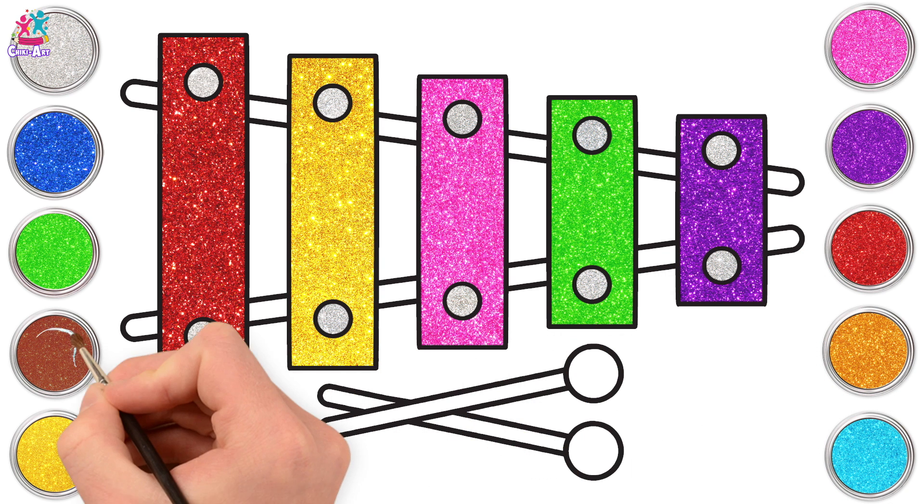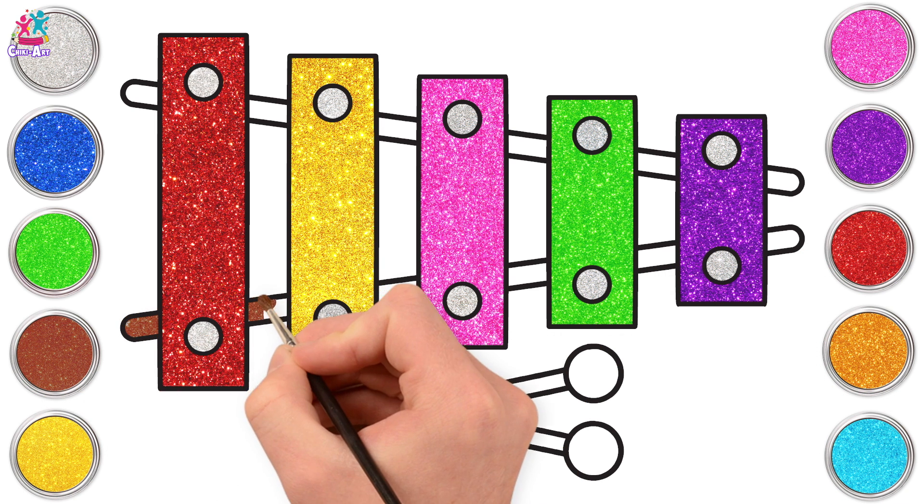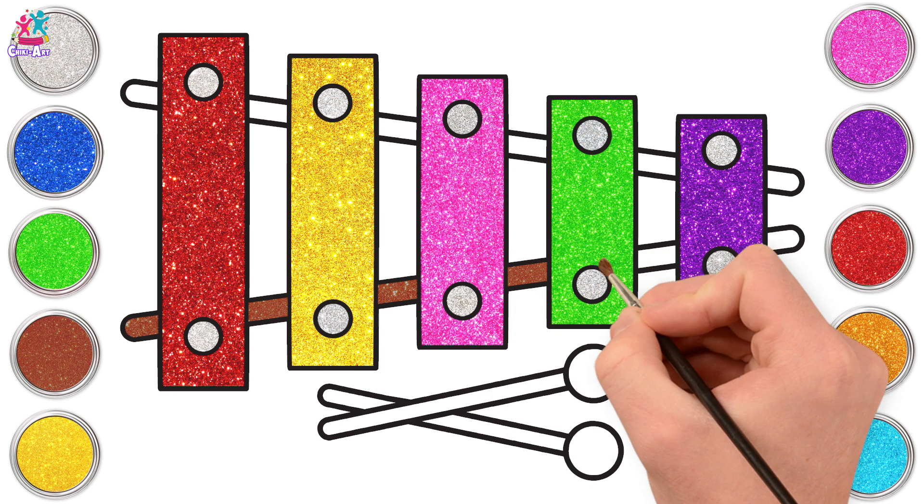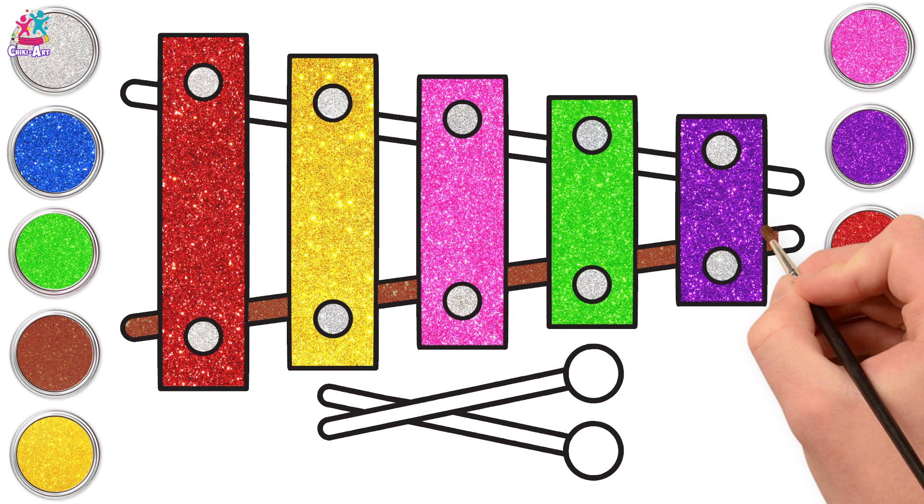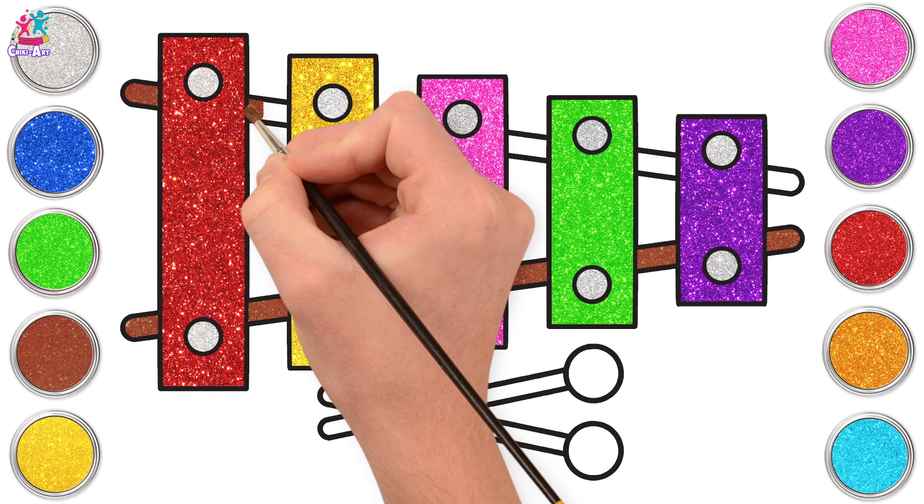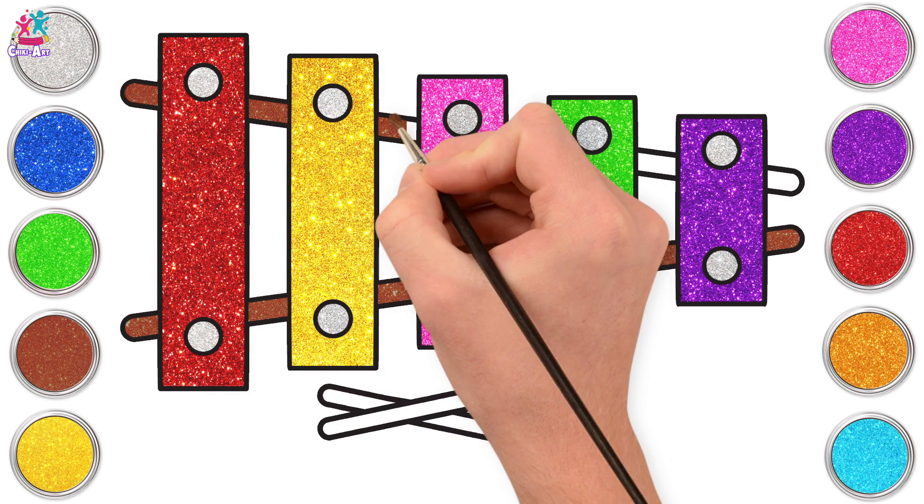Right, now for the underneath, brown, because this is going to be made of wood! So on a xylophone, we've got a wooden body connecting it all together, and the keys, the bits that we hit with our beaters, they are made of metal!